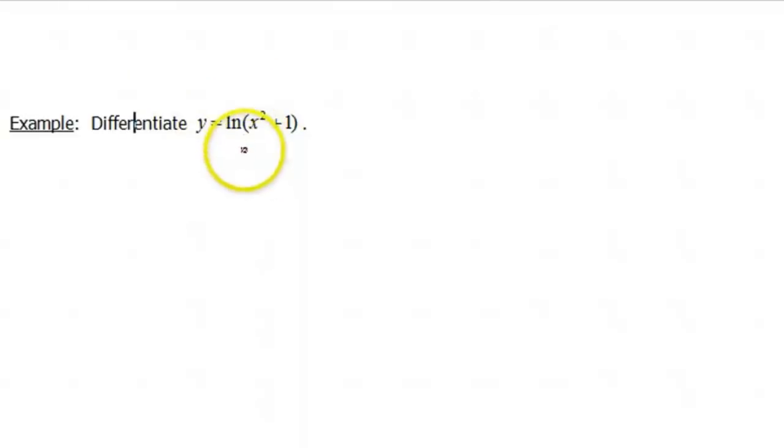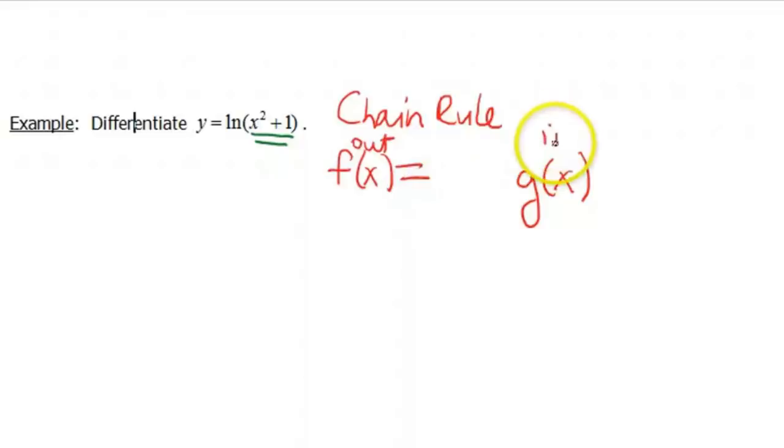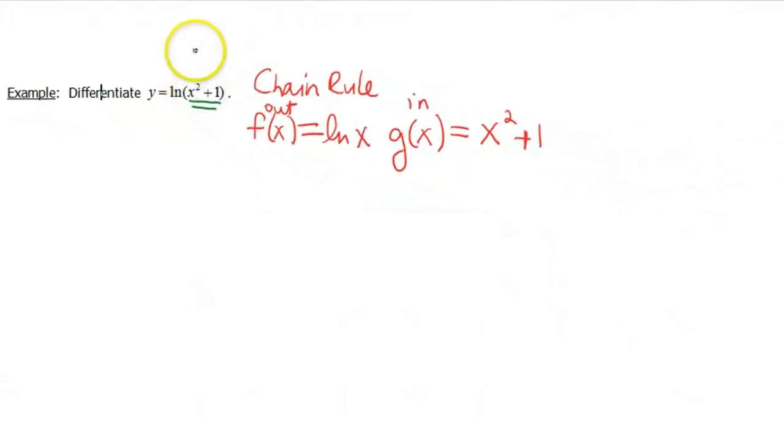So is this a multiplication? Are we gonna use the product rule for this one? No, this is a composition. This x squared plus 1 right here is inside of that natural log function. So what rule do we want to use then if we've got a composition? Well, that's the chain rule. So f of x is our outside function, g of x is our inside function. In this case, our outside function is the ln of x. Our inside function is x squared plus 1, because that's what's inside of this natural log function.